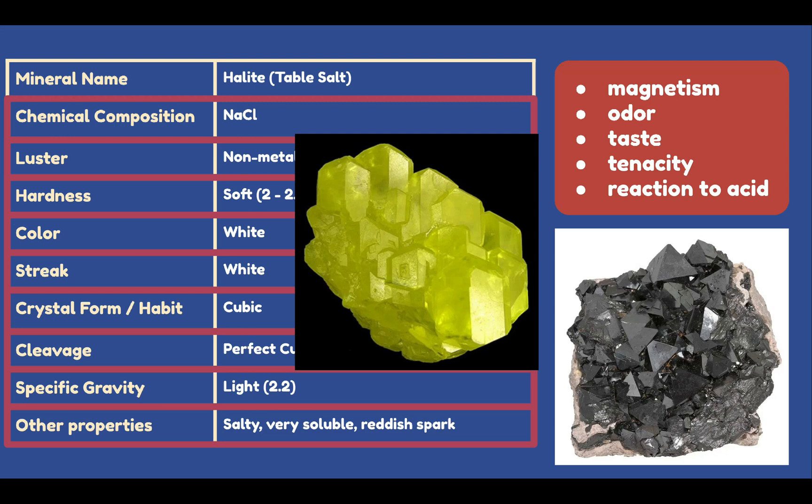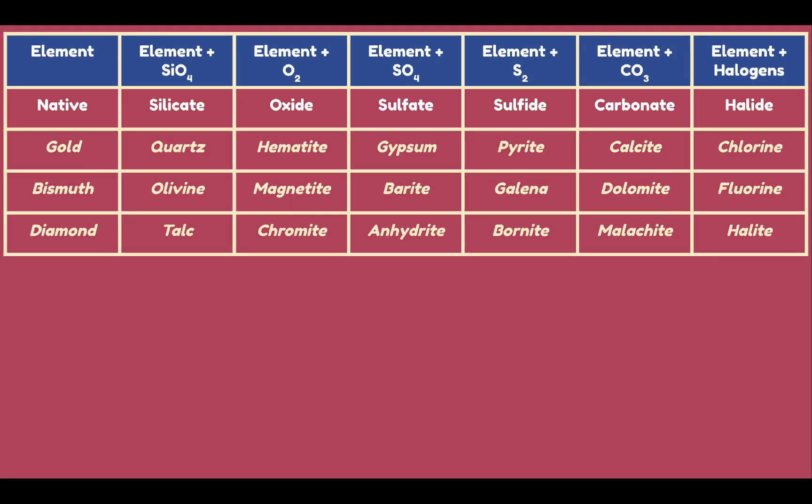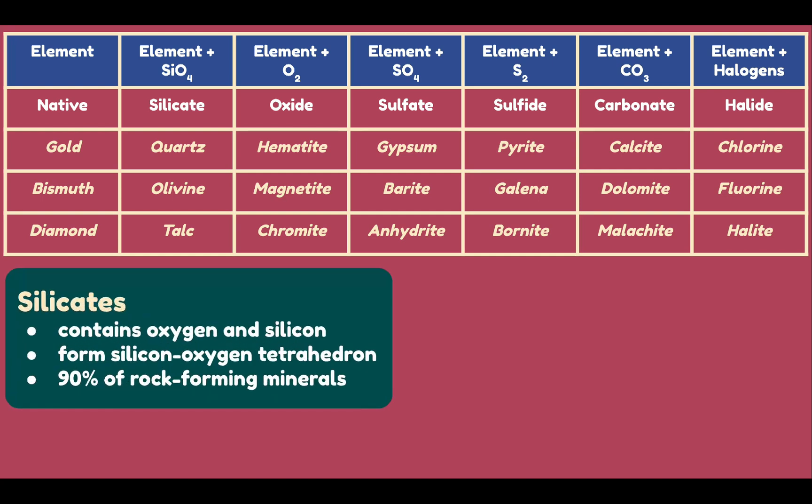Minerals can be categorized, and the most stable and least ambiguous basis for classification is based on their chemical compositions. First, we have silicates — minerals containing the two most abundant elements in the Earth's crust, namely silicon and oxygen. When linked together, these two elements form the silicon-oxygen tetrahedron, which is the fundamental building block of silicate minerals. Over 90% of rock-forming minerals belong to this group.